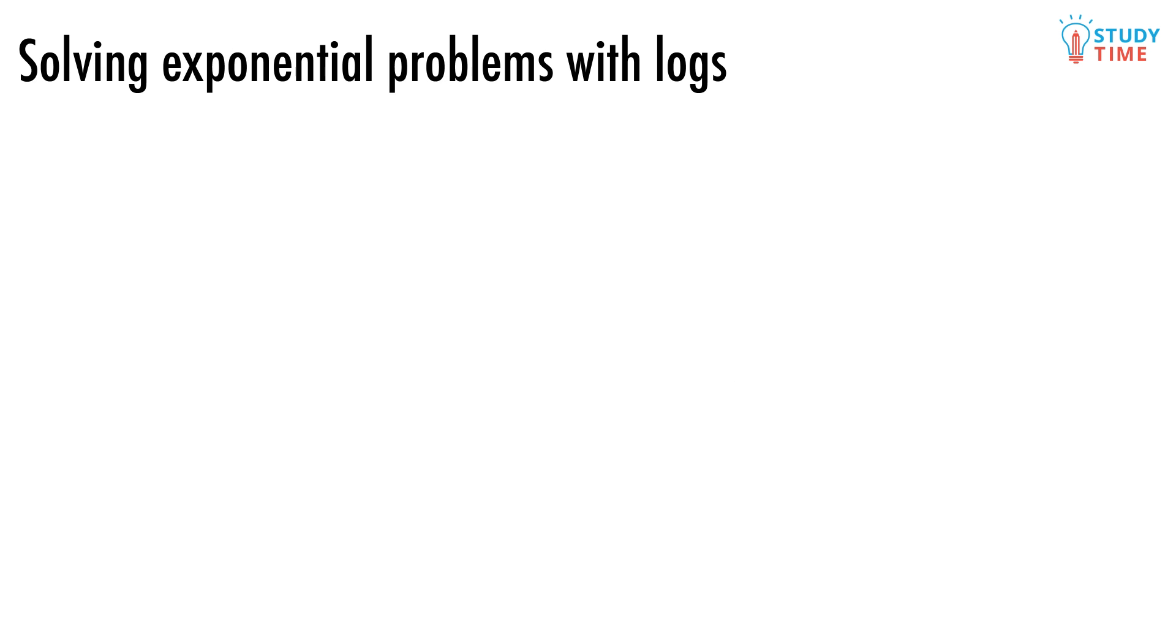Look at this exponential problem. 4 to the power of x equals 50. If you didn't know about logs, how would you tackle this? Is there even a way to solve this without logs? You might start out by trying different numbers for x, but pretty soon you'd realize that there's no whole number for x that makes 50. So what to do?